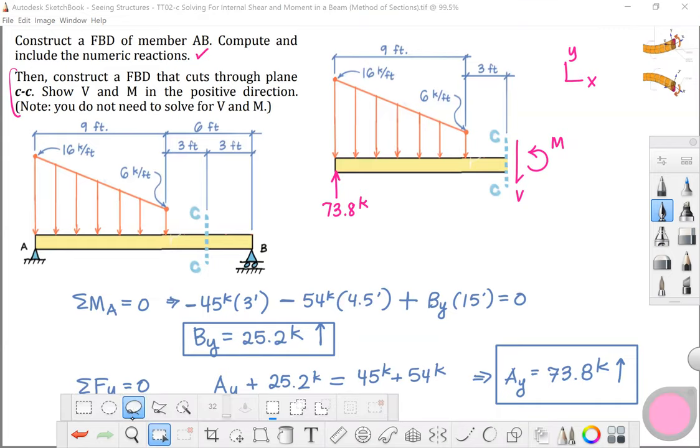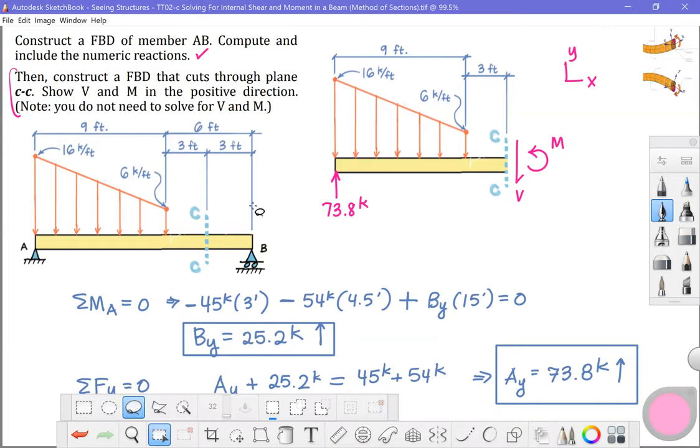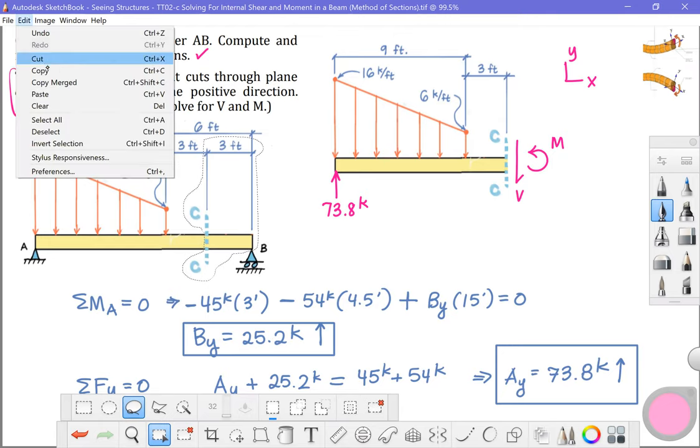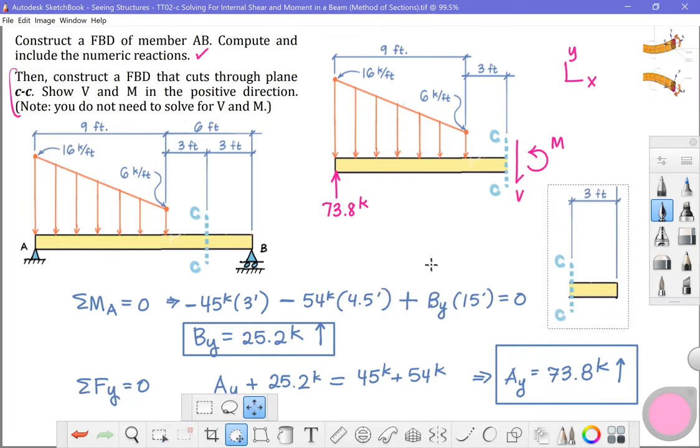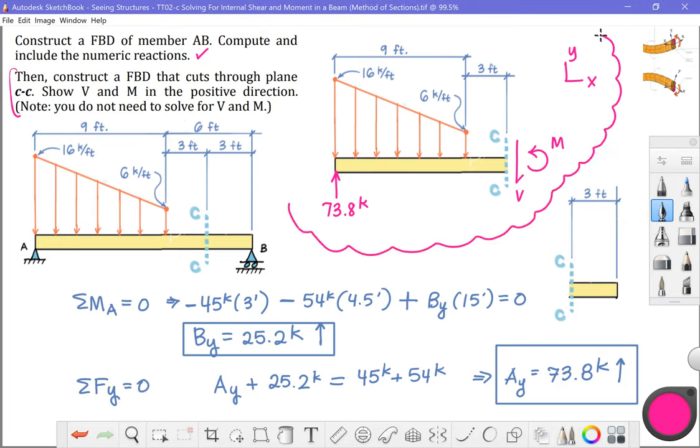I could also pick the other free body diagram. Here is what I would do there. Disconnect it from the support at B, slice through the solid material, but this time I just want the right side of the body. Copy, merge, edit, paste, and put that little beauty over here. So I could also use this free body diagram. Now, how do I put this one in equilibrium?